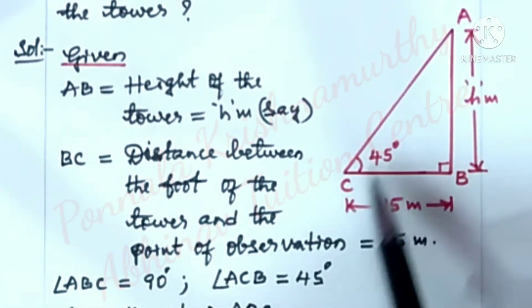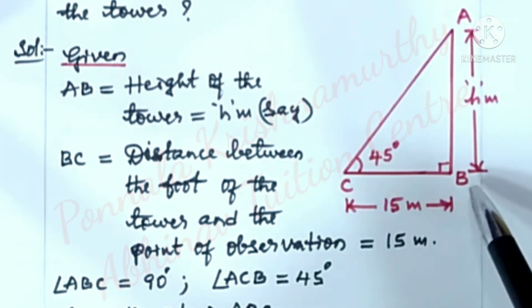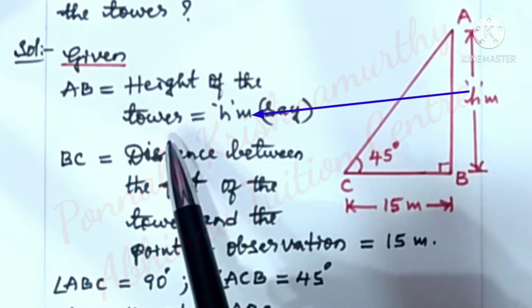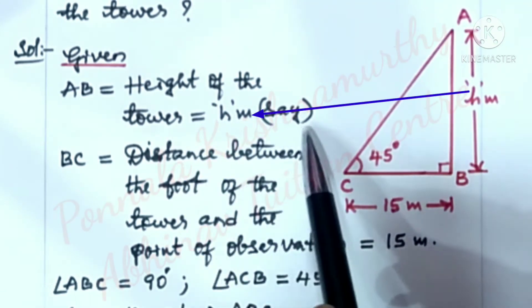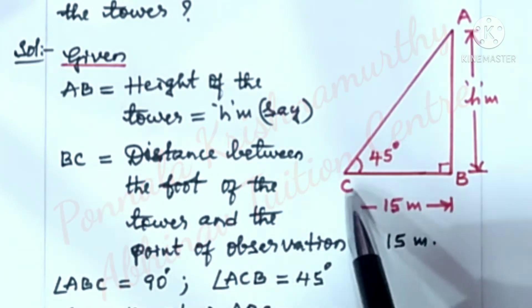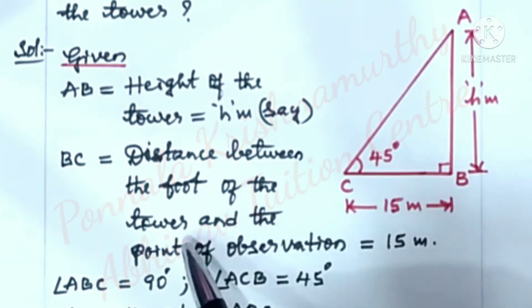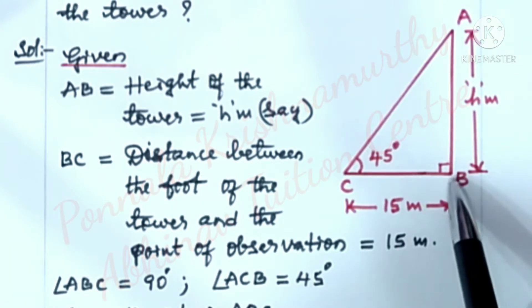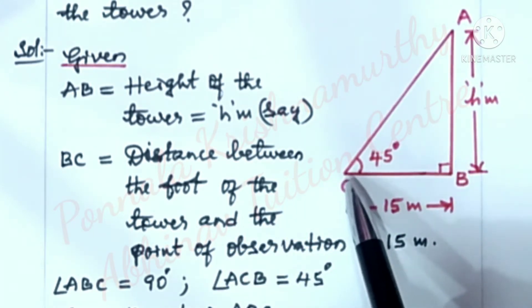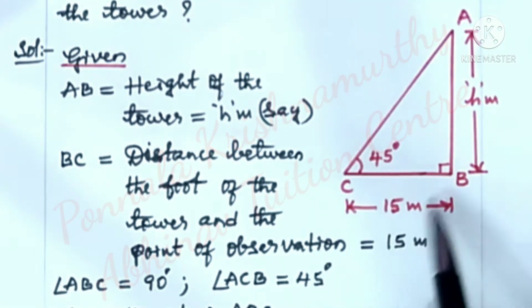Solution. Let this be the figure. AB is tower. AB equal to height of the tower is equal to h meters. Say this is h meters. BC is equal to distance between the foot of the tower, this is the foot of the tower, and the point of observation. This is the point of observation, that is equal to 15 meters.